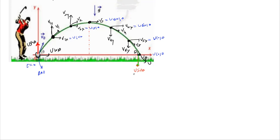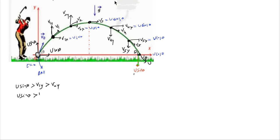Maximum vertical velocity is u sinθ at the point of projection. It decreases: v1y, v2y, becomes zero at the highest point, then because of the weight acting downward it starts increasing again: v4y, v5y, and finally strikes the ground with the same speed. So we can write: u sinθ > v1y > v2y, and similarly u sinθ > v5y > v4y.